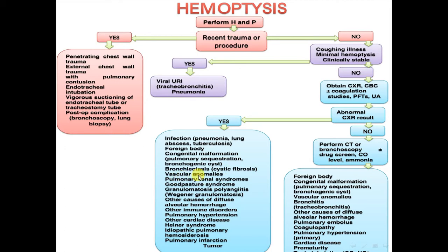Further differential diagnoses with an abnormal chest x-ray include cystic fibrosis, vascular anomaly, pulmonary-renal syndrome, Goodpasture syndrome, granulomatosis with polyangiitis, Wegener's granulomatosis, other causes of diffuse alveolar hemorrhage, other immune disorders, pulmonary hypertension, other cardiac disease, Heiner syndrome, idiopathic pulmonary hemosiderosis, and pulmonary infarction or tumor.